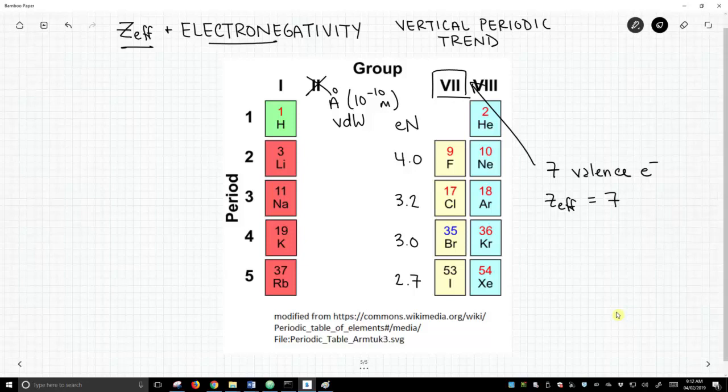The van der Waals radius for fluorine is about 1.47 angstroms. Chlorine is 1.75, bromine is 1.85, and iodine comes in at 1.98.